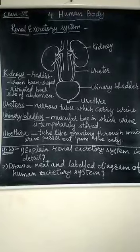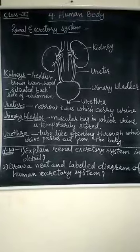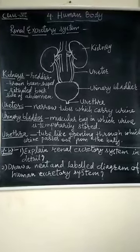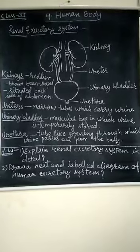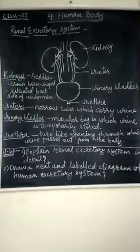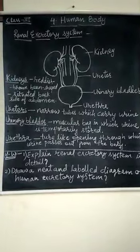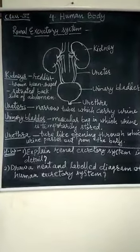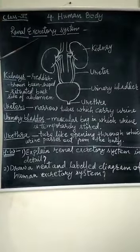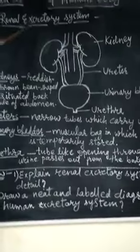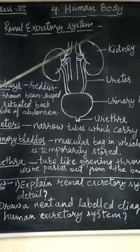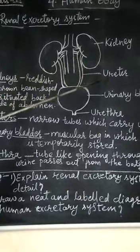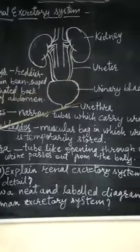Hello students. In today's class you will learn about the renal excretory system. The renal excretory system is also called the urinary system, and it consists of the kidney, ureter, urinary bladder, and urethra.